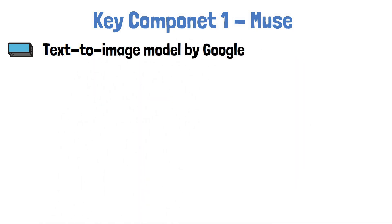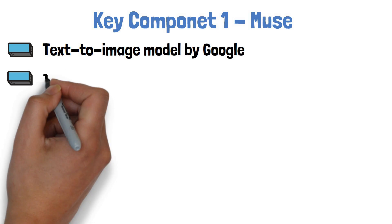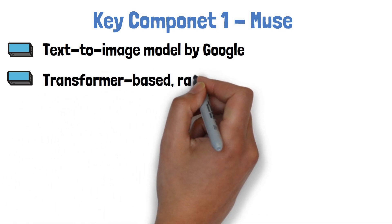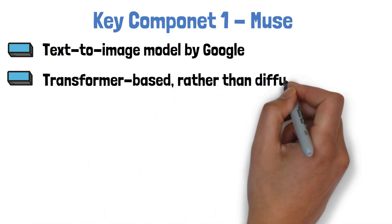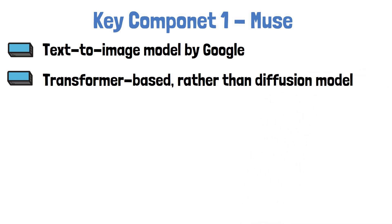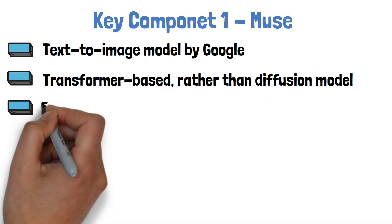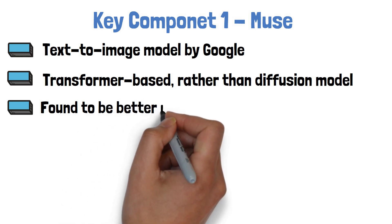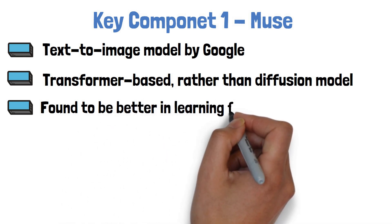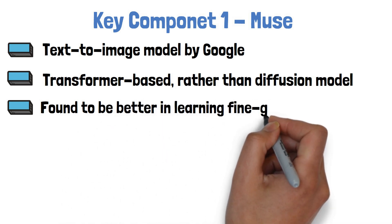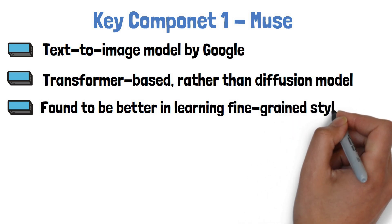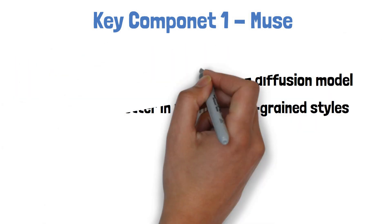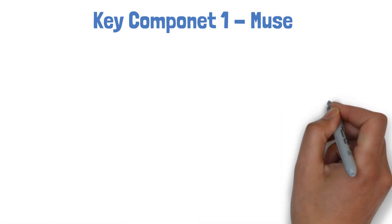We will leave the full description of Muse to a different video, but it is worth mentioning that it is a transformer-based model rather than a diffusion model, which is common in other top text-to-image generation models such as StableDiffusion. The researchers found the transformer architecture is a better fit for learning fine-grained styles compared to diffusion models, such as Google's Imagen and StableDiffusion. As said, we won't dive deep into Muse here.